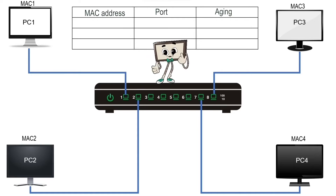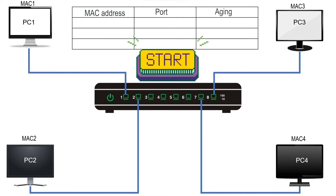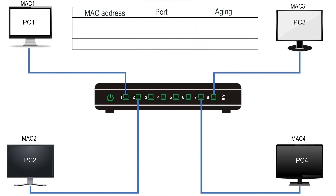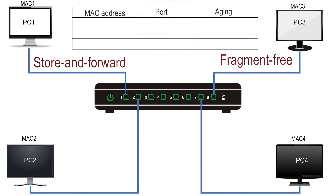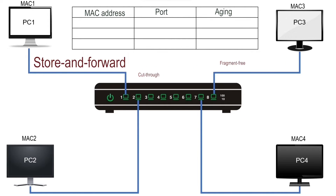A switching method explains how a switch starts the forwarding phase. There are three switching methods: the store-and-forward method, the fragment-free method, and the cut-through method.